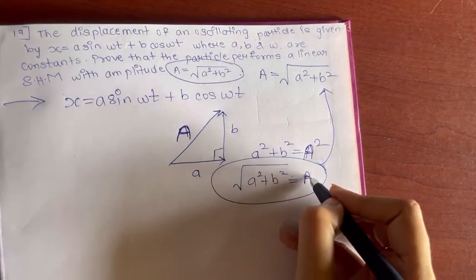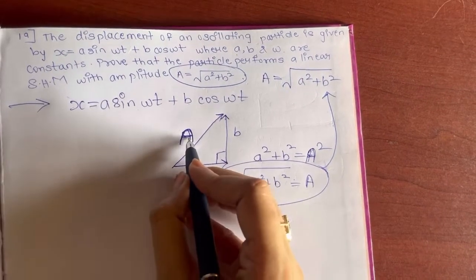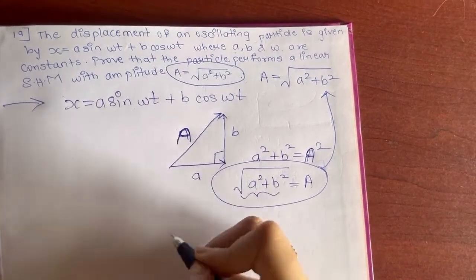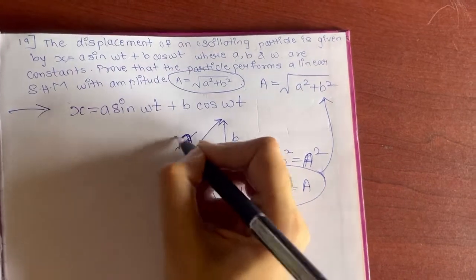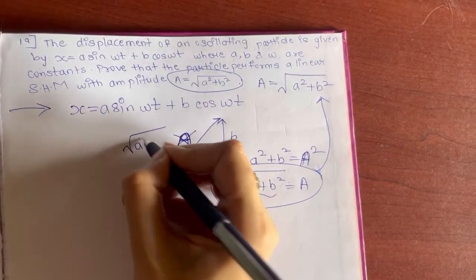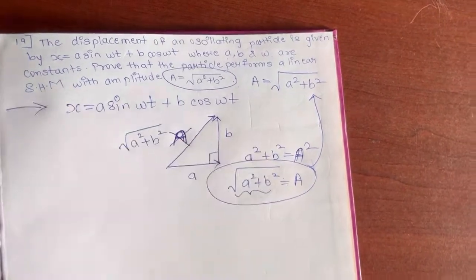So instead of capital A over here, can I write this value? Yes, of course I can write this value, instead of capital A, that is √(a² + b²).